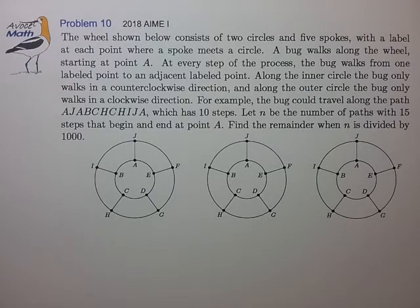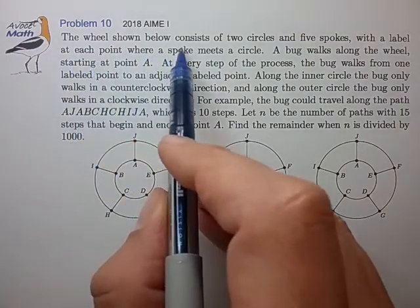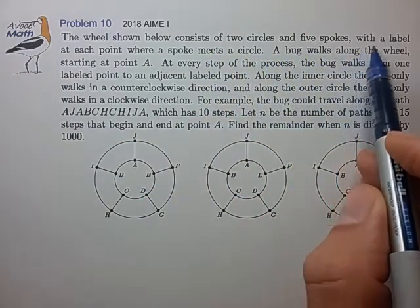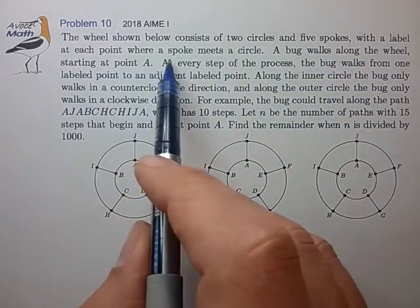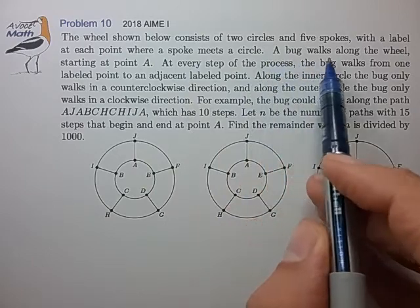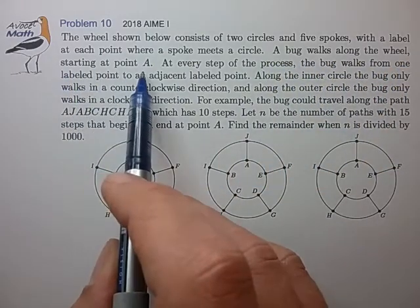Hi, this is problem 10 from the 2018 AMC 10A. The wheels shown below consist of two circles and five spokes, with a label at each point where a spoke meets a circle. A bug walks along the wheel starting at point A.